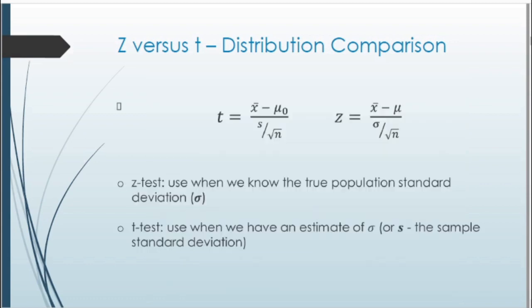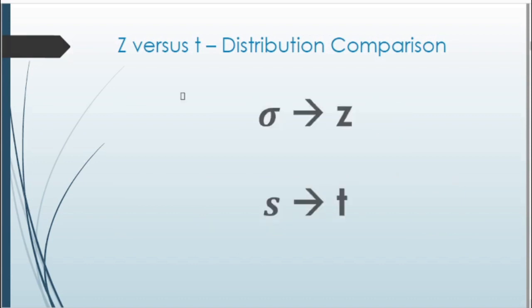Since these distributions are similar, how to find either test statistic is also pretty similar. The main difference is whether we know the population standard deviation versus the sample standard deviation. When we have the population sigma, we use the z-statistic; when we have the sample s, we use the t.